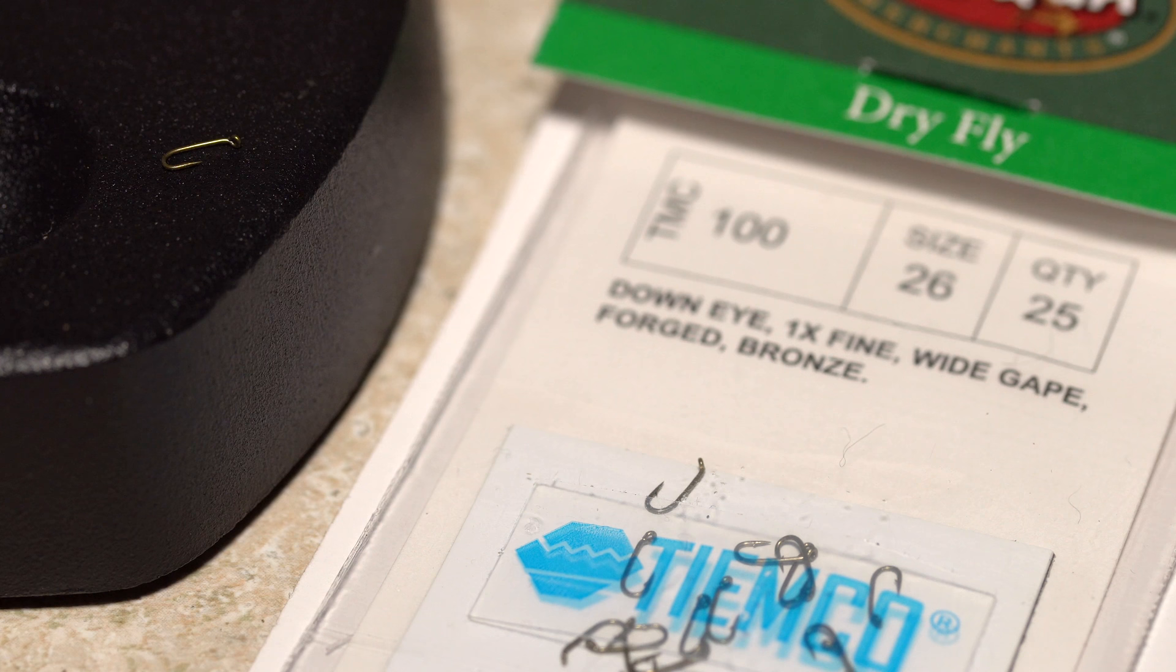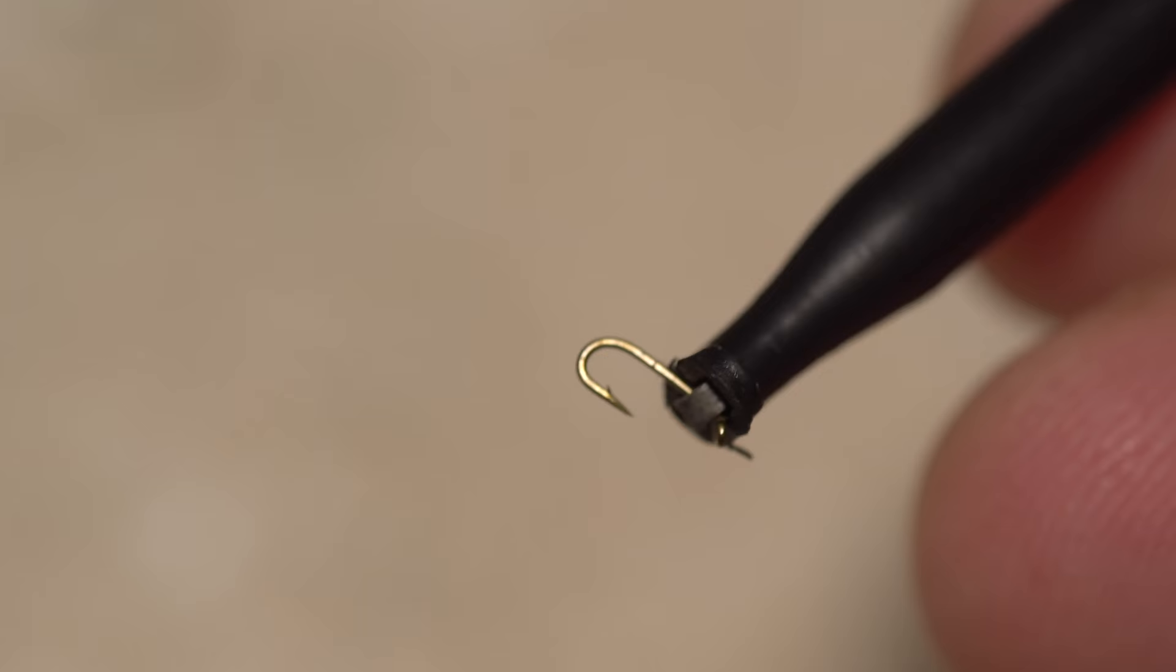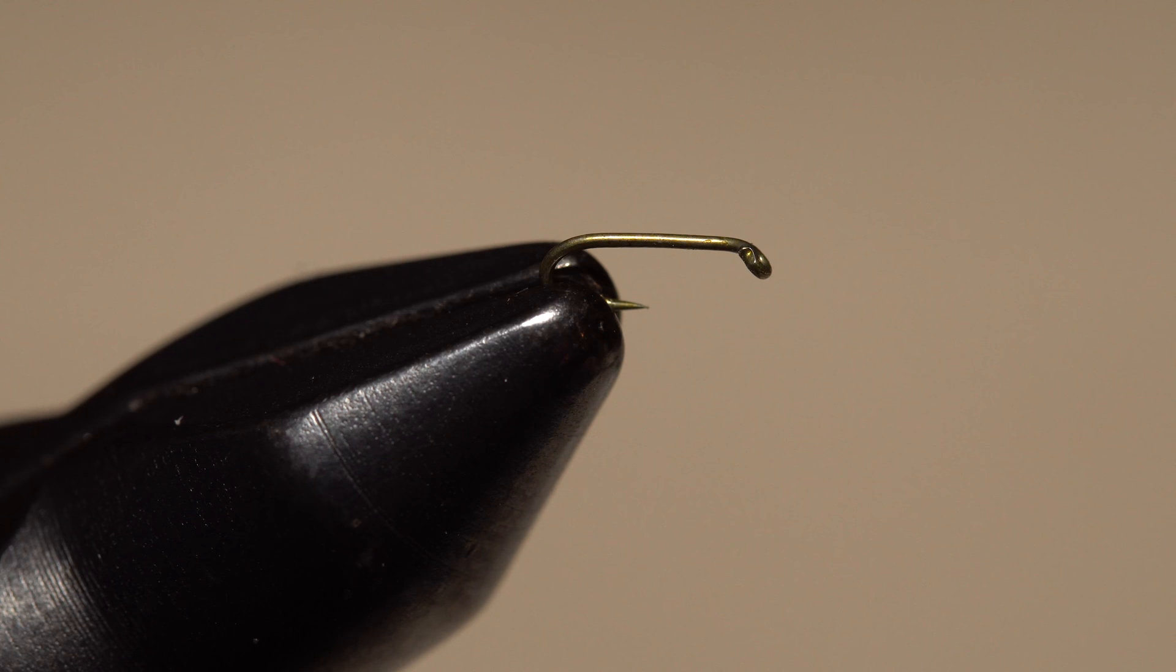For Peg's midge I start with a TMC 100 dry fly hook in a size 26. Plunger style hackle pliers do make handling hooks this small much easier. Fine needle nose pliers work especially well for mashing the barb. You can usually hear a click when it's either been bent down or broken off. Get the hook firmly secured in the jaws of your tying vise, and yes, midge jaws like these are a treat to work with.